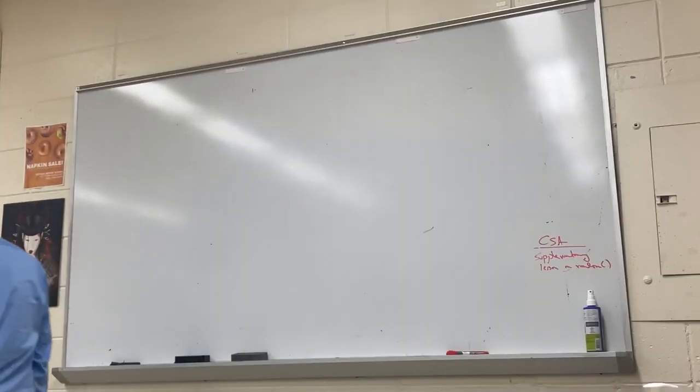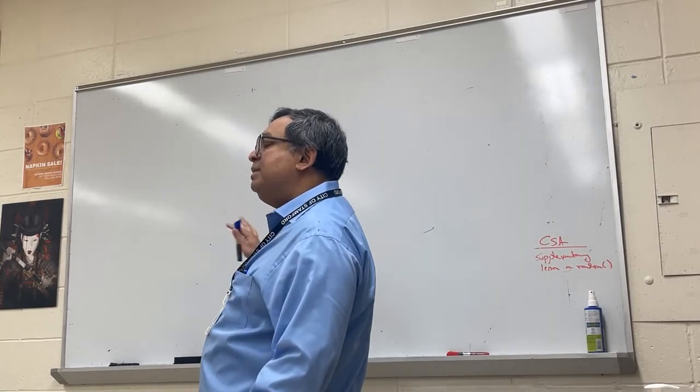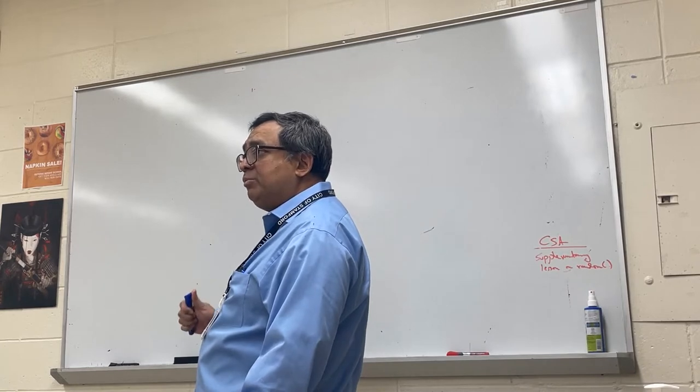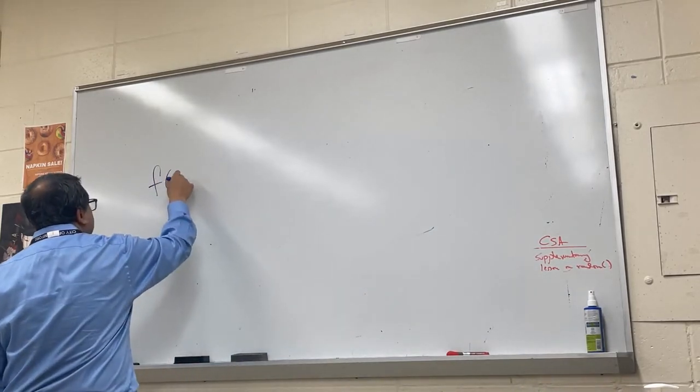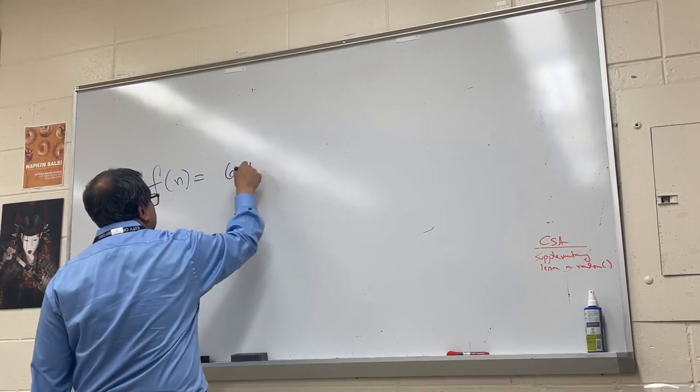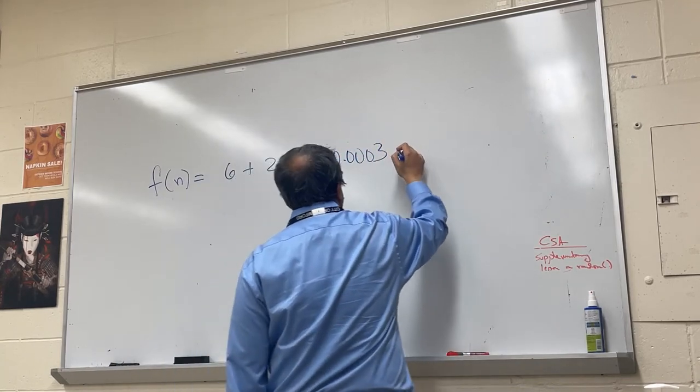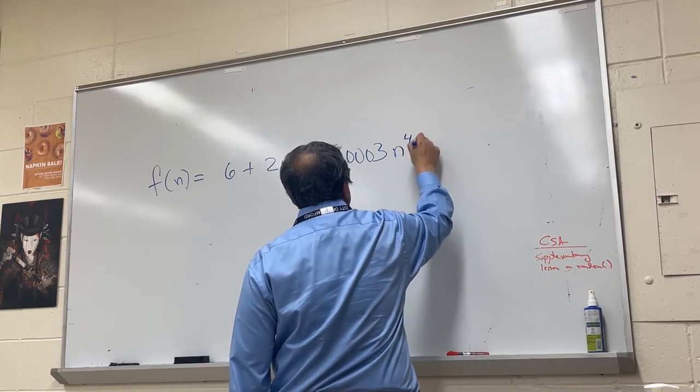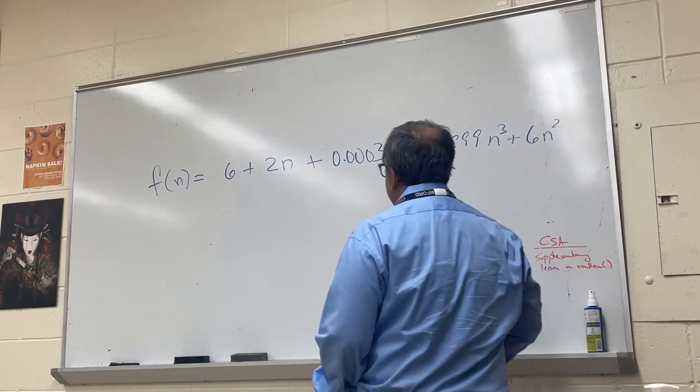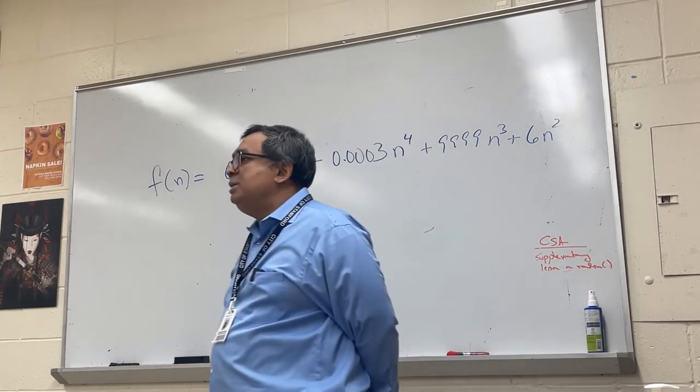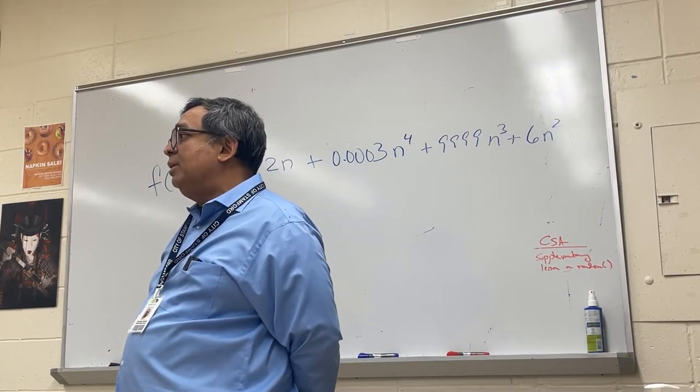Next topic we need to discuss is end behavior. So I'm going to put up an expression on the board and one of the terms in the expression is going to drive the end behavior of the expression and I would like to know what is that term. So here's the term. F of n equals 6 plus 2n plus 0.0003 n to the fourth plus 9999 n to the third plus 6n square.